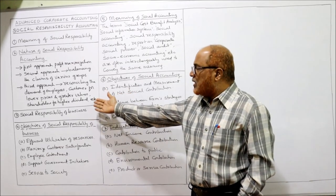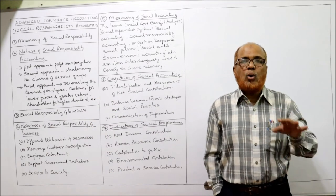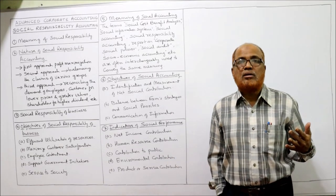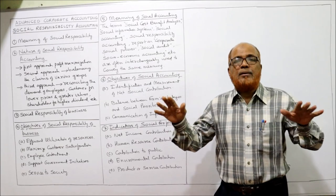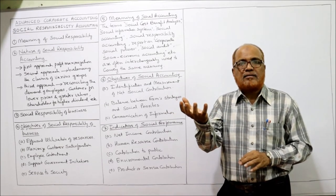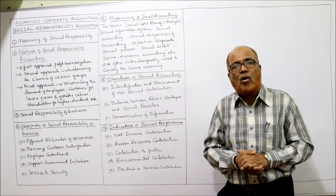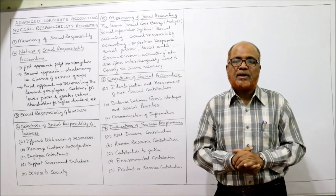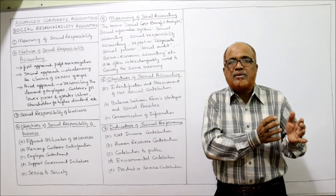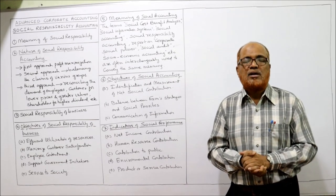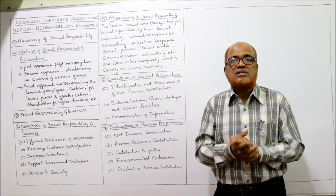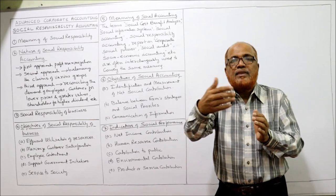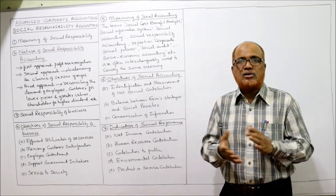Customers want better quality goods at a lower price. Thirdly, shareholders expect a higher rate of dividend and good capital appreciation. Corporate managers have to reconcile all the demands and expectations of all parties for the company to survive long term. Ignoring the profit objective is not possible — a company must first earn sufficient profit to survive, and only then can it spend on social responsibility.